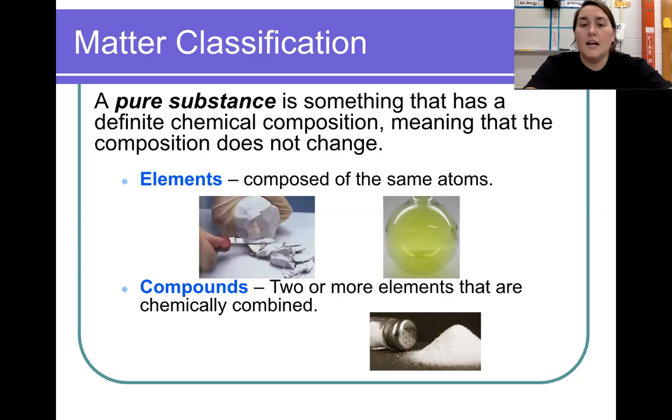Compounds are made up of two or more elements that are chemically combined or bonded together. An example would be table salt, which has sodium and chlorine attached to it, or carbon dioxide, which has one carbon and two oxygens attached to it.